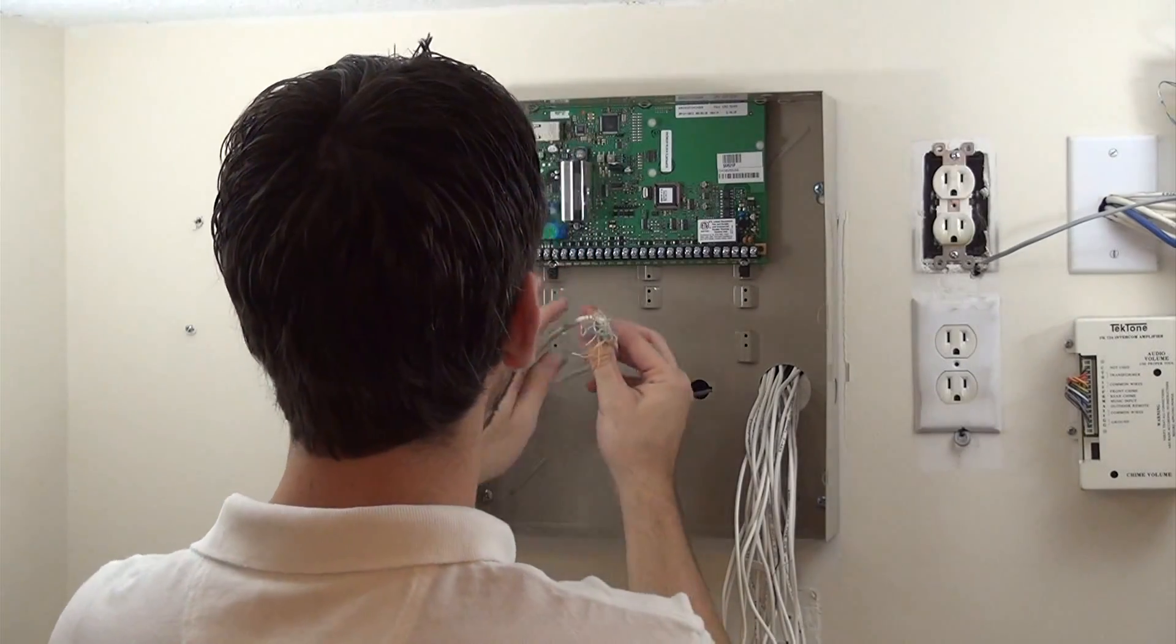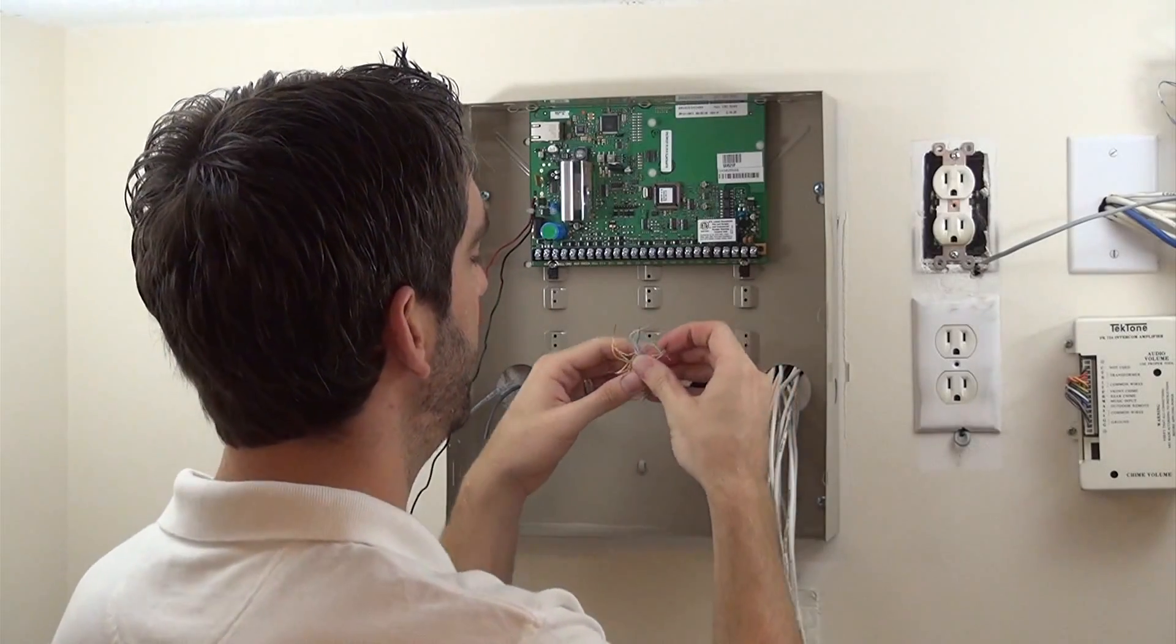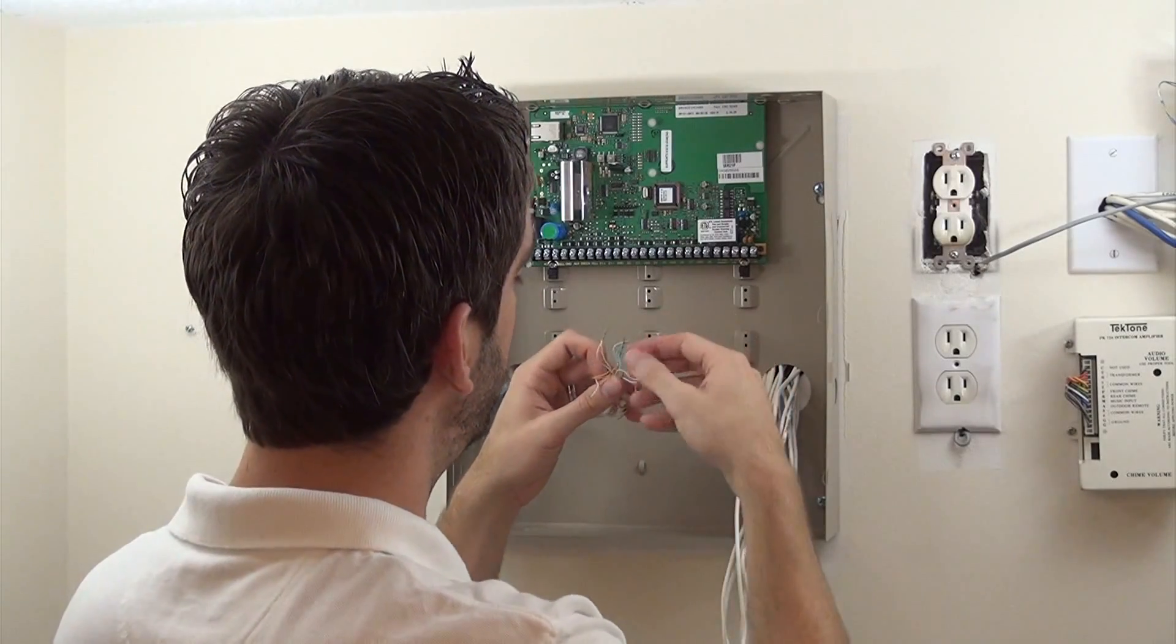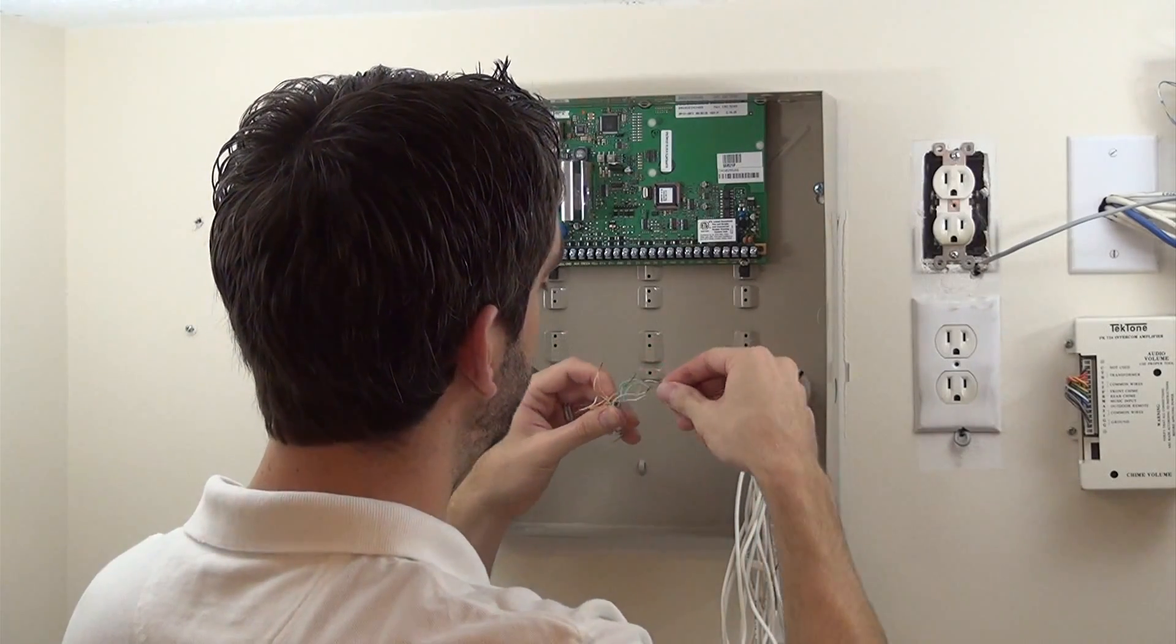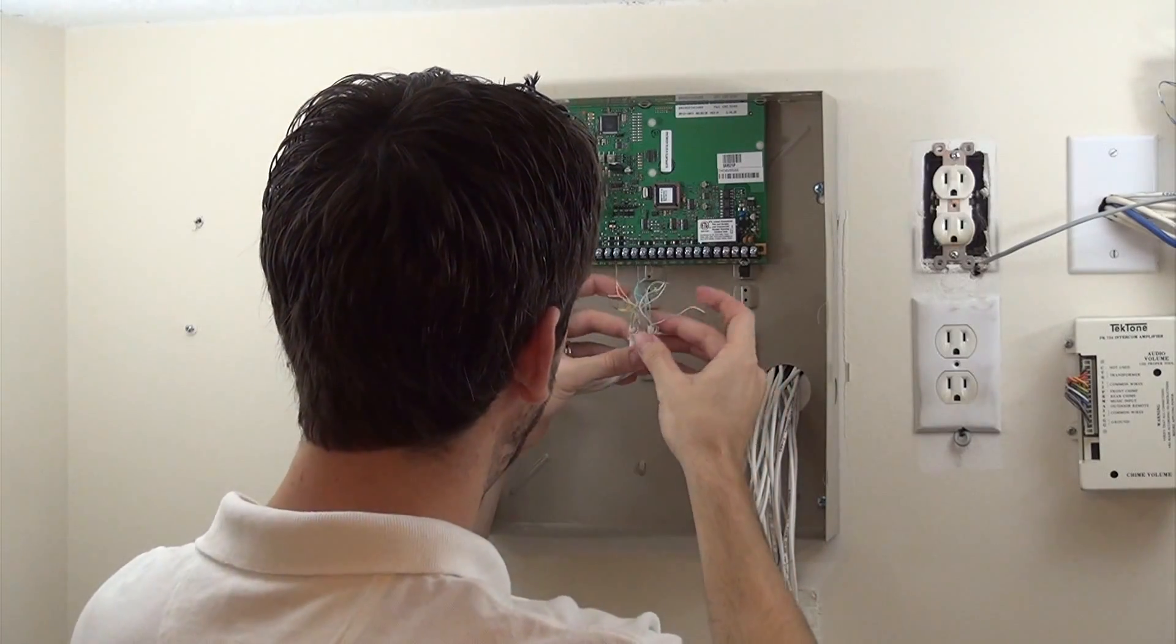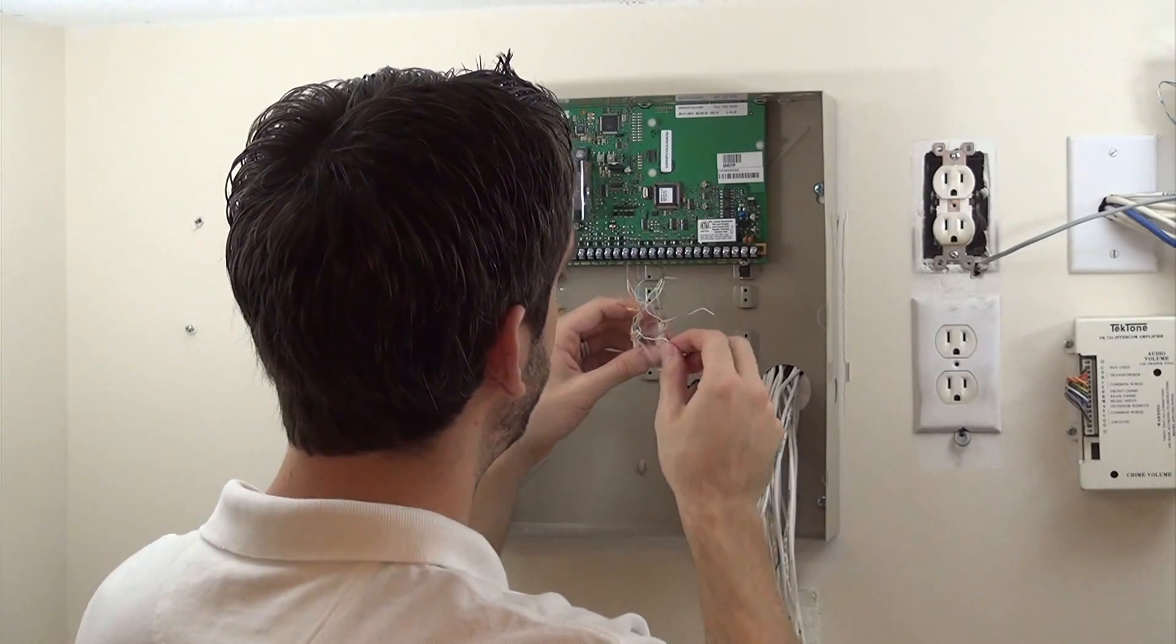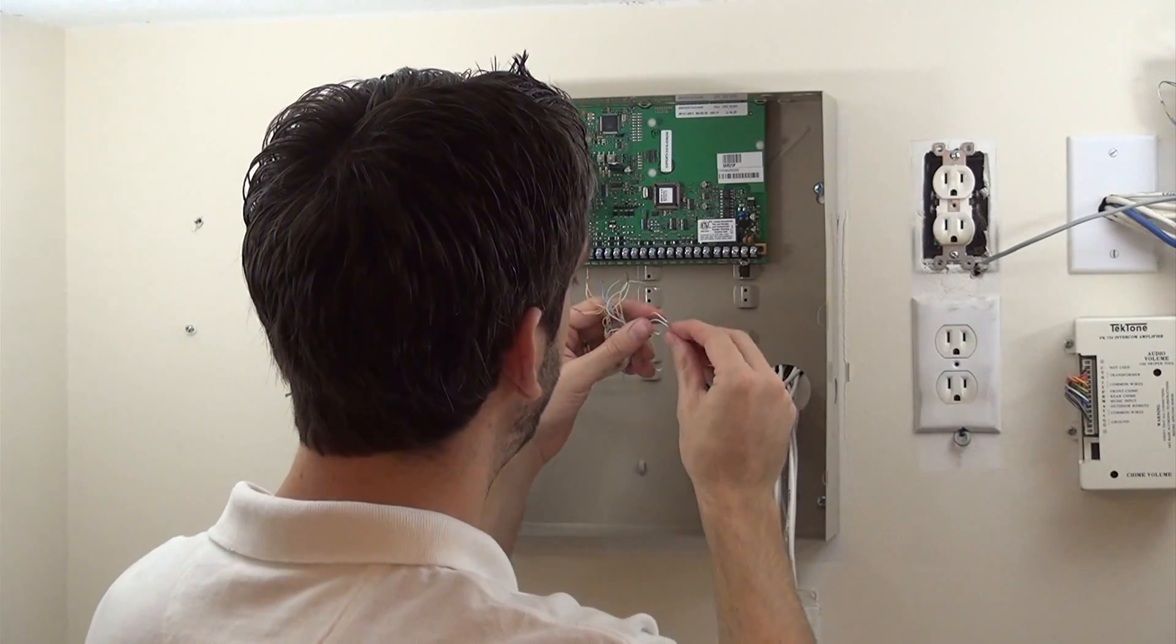We've got our keypads twisted together here, and as we said before, the Destiny keypads actually have six wires, unlike the Honeywell keypads that use just four. There are two for a speaker, and then four for the data and the power to the keypads.